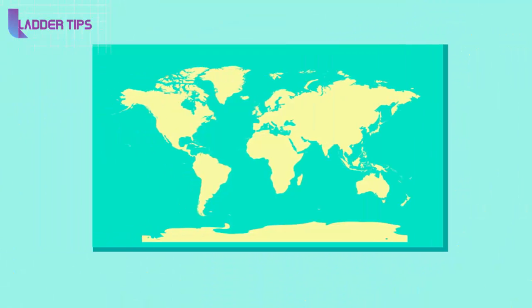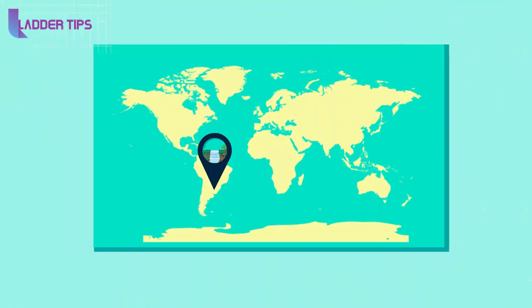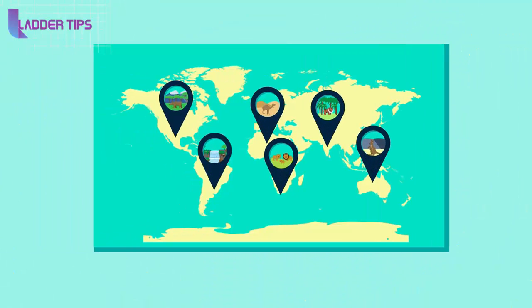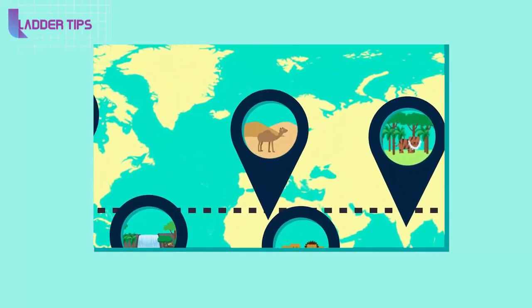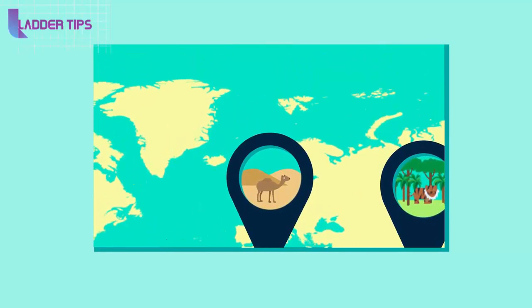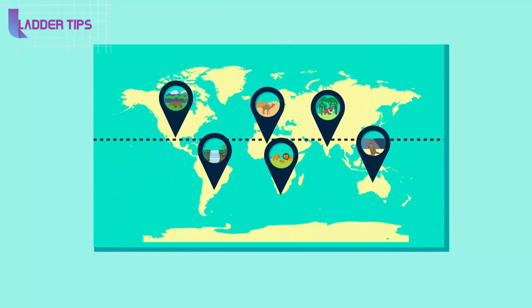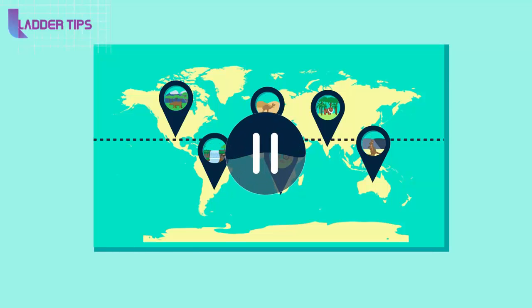In general terms, biodiversity tends to be highest at the equator and decreases at higher latitudes, i.e. as you get further away from the equator. Knowing this information, where would you expect to find the habitats with the lowest biodiversity? Pause the video and have a think.